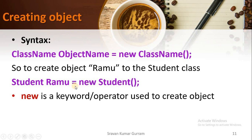Focus on the right-hand side of the assignment operator — we have 'new Student'. When the program is being executed, with the help of 'new Student', an object will be created for the class Student, and the variable Ramu holds the reference to that created object.